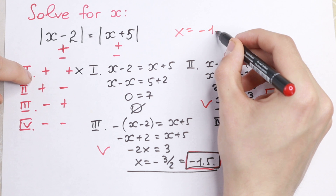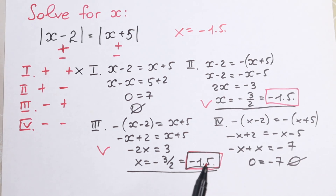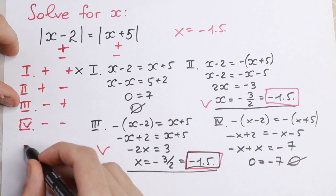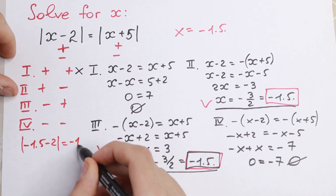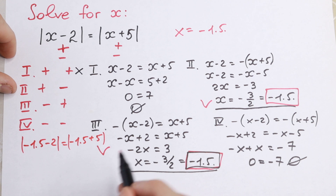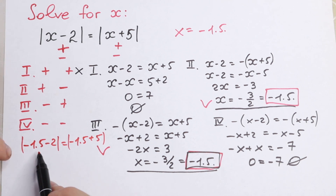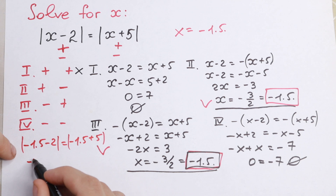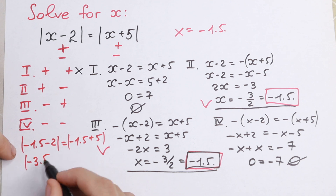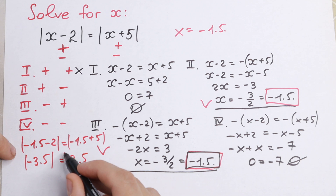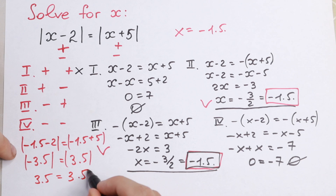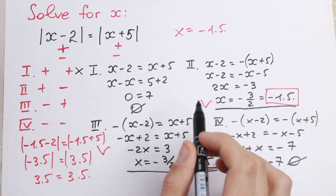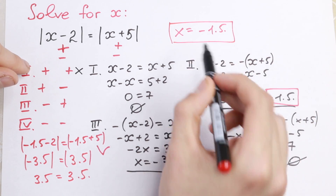So x equals minus 1.5. Let's check and prove this root. We will have minus 1.5 minus 2 equal to minus 1.5 plus 5. On the left side we get minus 3.5, but with absolute value that becomes 3.5. On the right side we have 3.5. So absolute value of minus 3.5 equals 3.5 — this root is confirmed as the one and only root.